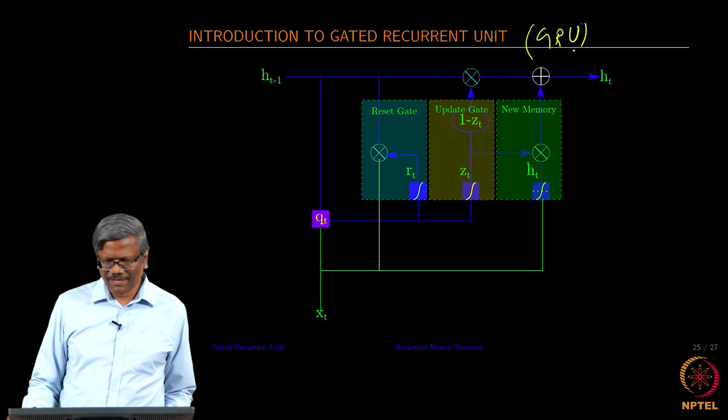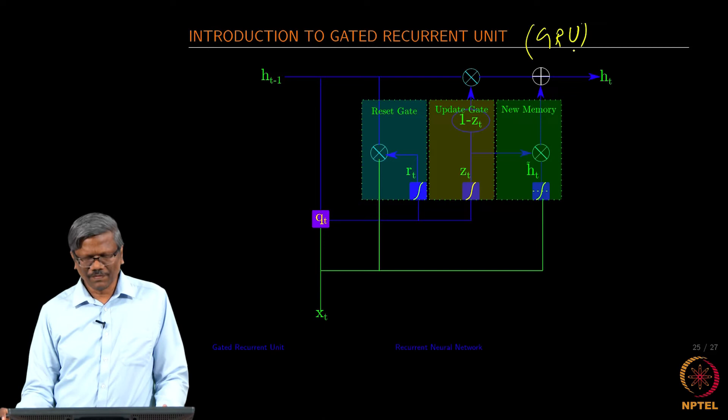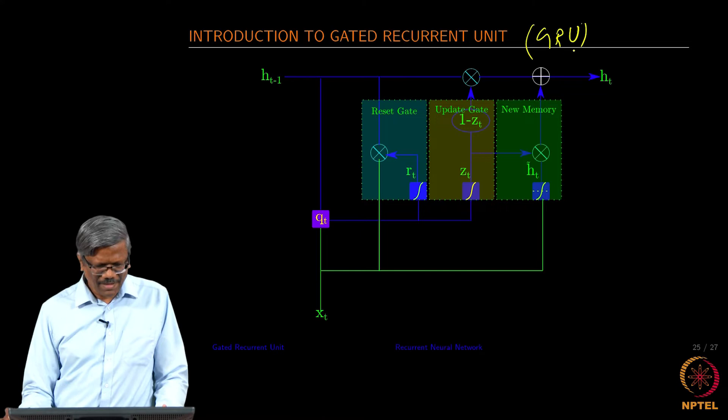It is making use of the same h_t that we had computed in the normal RNN or the vanilla RNN, with a slight change in terms of how we want to allow the values to be passed on to the next state.